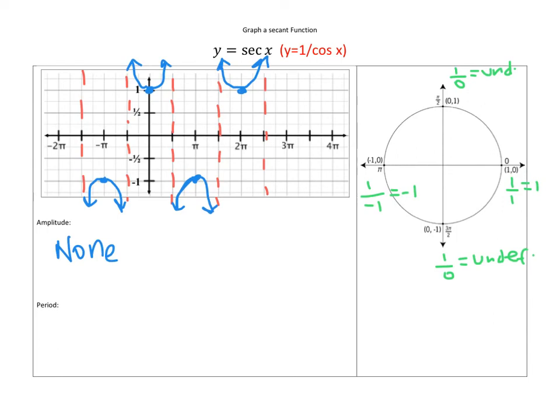I also see the period. If I check from here to here, I see the same pattern repeating. This is 2π, so the period is 2π. And that's how to graph the secant function.